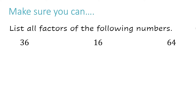Before we begin, let's make sure you know how to factor numbers. If you have to list the factors for a number like 36, you start with 1 because it's the first counting number: 1 times 36 is 36. Then 2 times 18, 3 times 12, 4 times 9, and 6 times 6. Since 5 didn't go into 36 evenly, I didn't write it. Because 6 times 6 lists itself twice, that's my cue that I've written down all of the factors.